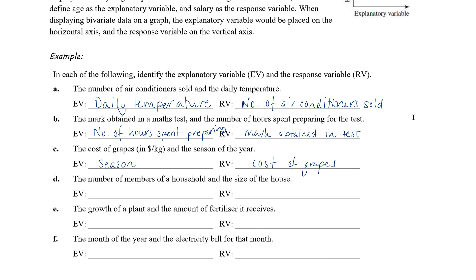The number of members of the household and the size of the house. In most instances, the size of house that a family chooses to live in is dictated by the number of members in the household. If you've got a household with just two members you probably don't have a very large house; if you have a six-member family then you probably have a larger house. It wouldn't be that having a large house means you must increase the size of your family — it would be that having a large family drives your decision about your house. So the explanatory variable is the number of members of the household and the response variable is the size of the house.